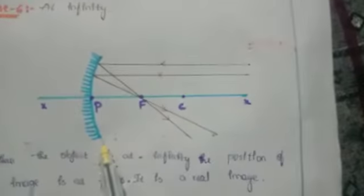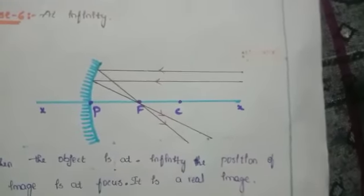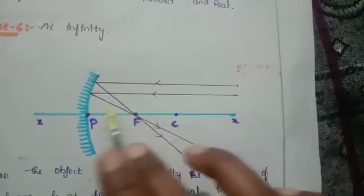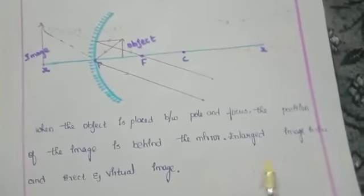Last case — object at infinity. See here, it is the ray diagram of concave mirror case 6. When the object is placed at infinity, we don't know where it is — we can't see that object. But one ray is coming parallel to the principal axis and passing through the focus, and another ray also comes parallel to the principal axis passing through the focus. These two rays are meeting at one point — that is the focus. So here is the image. When the object is at infinity, the position of image is at focus. It is a real image. In summary, all cases except the first give inverted and real images, but the first case gives an erect and virtual image. Thank you.